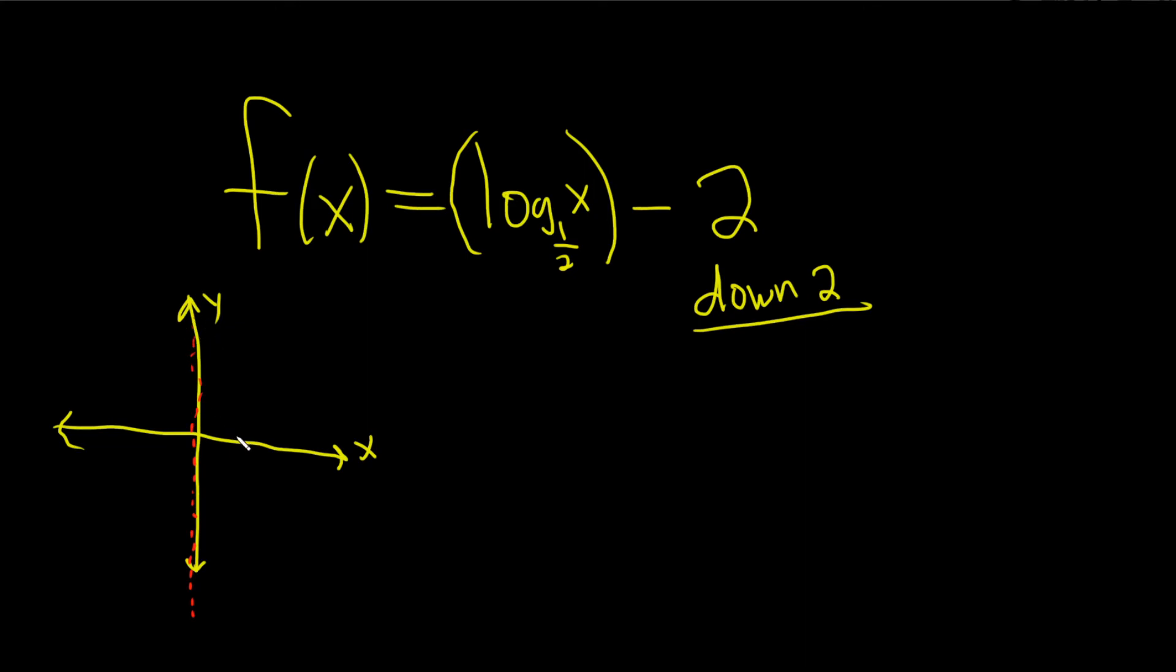And it crosses the x-axis at 1. And it looks like an upside down log function. But the regular log function goes the other way, this one goes this way. It's kind of flipped, right? Normally the log function looks like this. So it's basically being flipped. Okay, so this is the graph of log base 1 half of x.